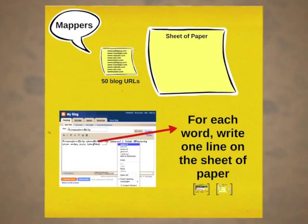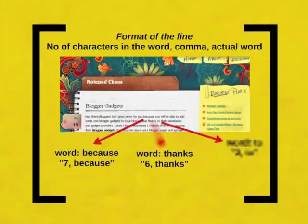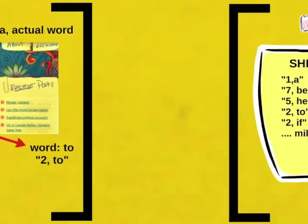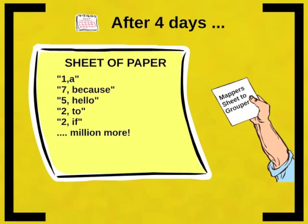You talk to each of the groups. The mappers: each mapper will get a set of 50 blog URLs and a really big sheet of paper. Each one of them needs to go to each of the URLs, and for each word in those blogs, write one line on the paper. The format of the line should be the number of characters in the word, then a comma, then the actual word. For example, if you find the word 'a', you write '1,a' on a new line. If you find the word 'hello', you write '5,hello' on a new line. After four days, each mapper gives their completely filled sheet to the grouper.